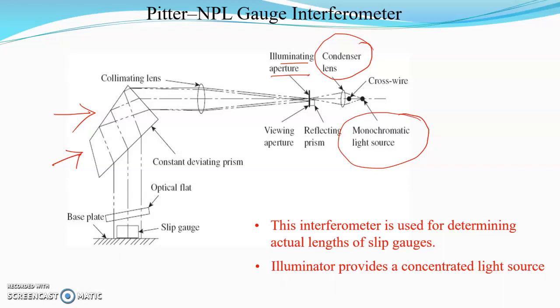The user can select a particular color by tilting the angle of the constant deviating prism. For a particular angle, it will give a particular light ray of a particular wavelength.